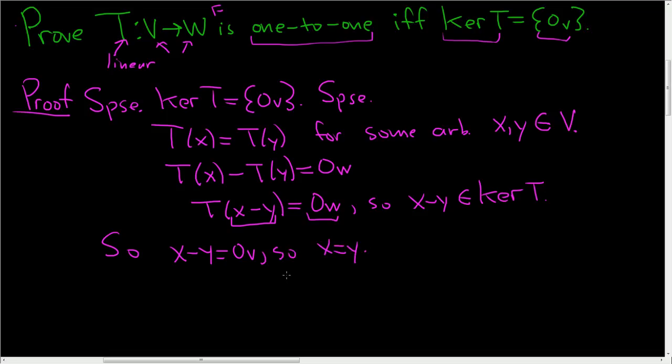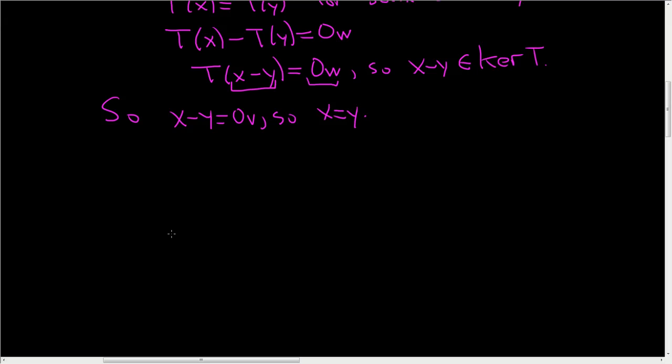Really, really incredible. All right, now we have to go the other way. We have to assume that T is one-to-one, and we have to show the kernel is just the zero vector. So suppose that T from V into W is one-to-one. And we need to show that the kernel contains only the zero vector.